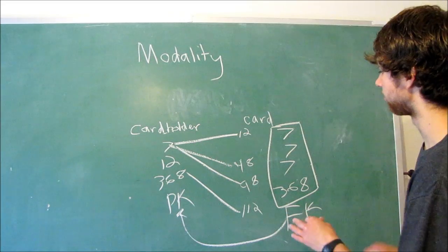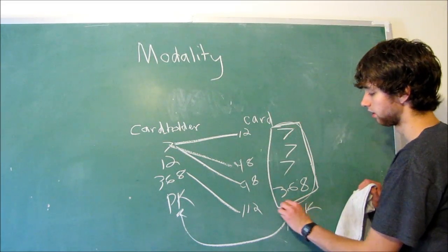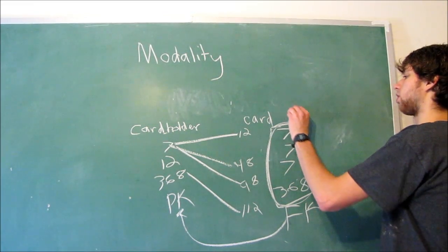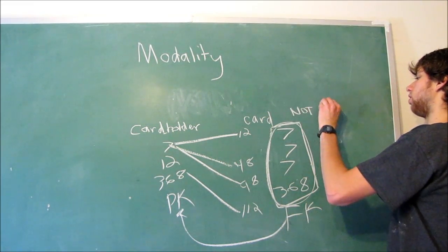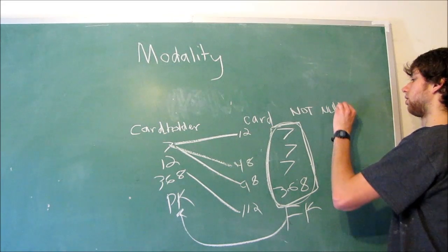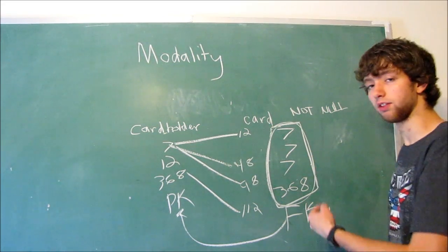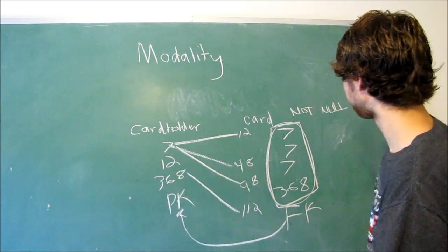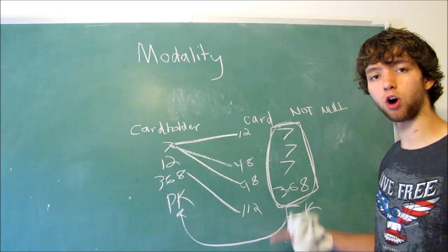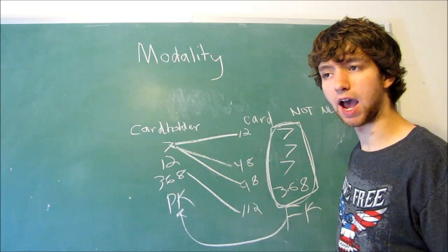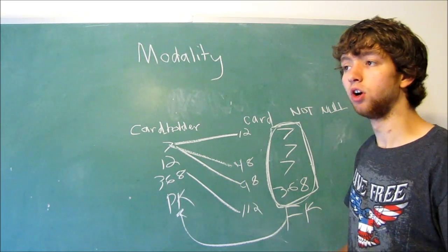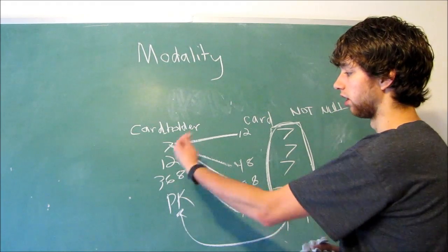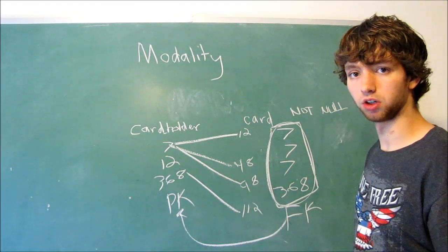Now, if we gave this column right here, the foreign key, basically the card holder column, if we gave it the column characteristic not null, it would be required that every single row has an owner. That means we can't have a card in here that is either not activated and doesn't have an owner, or we can't have a card in there that is not being currently possessed by a card holder.